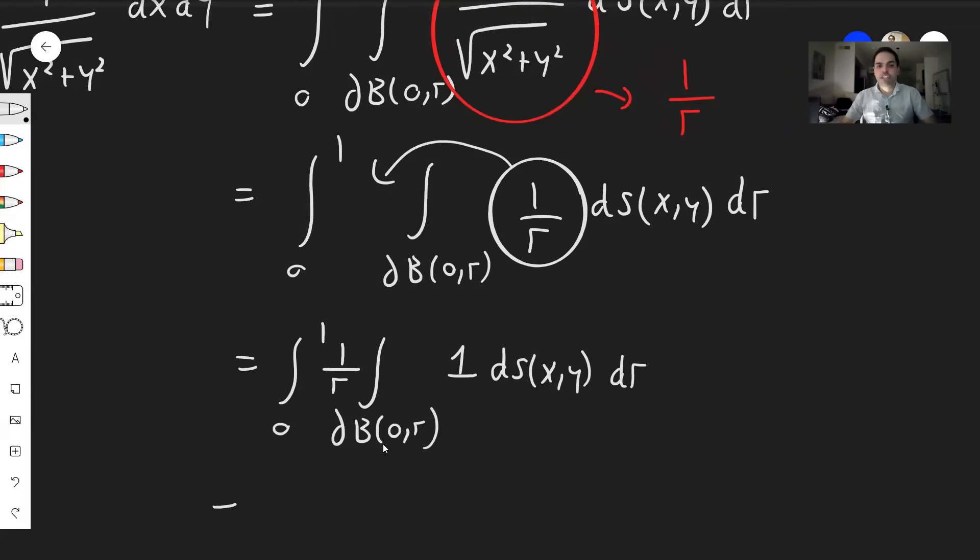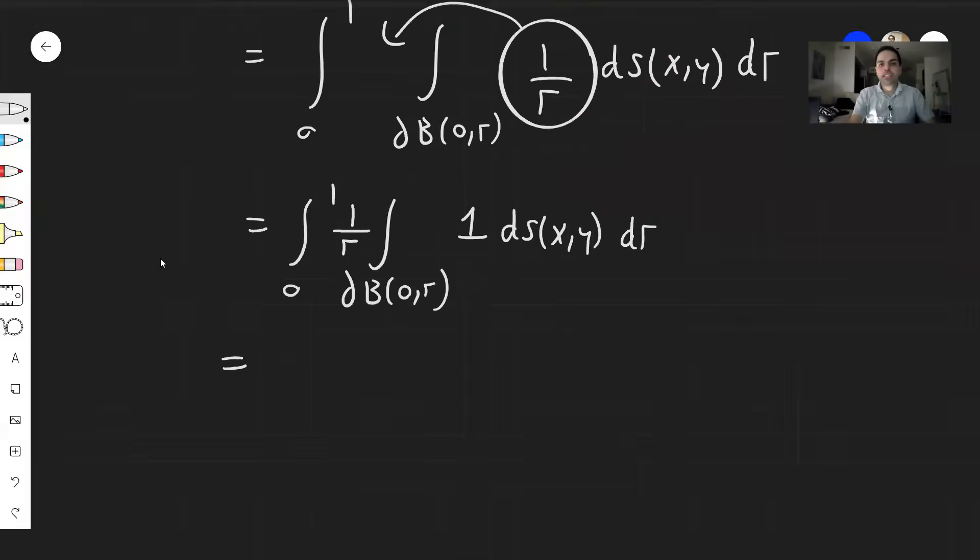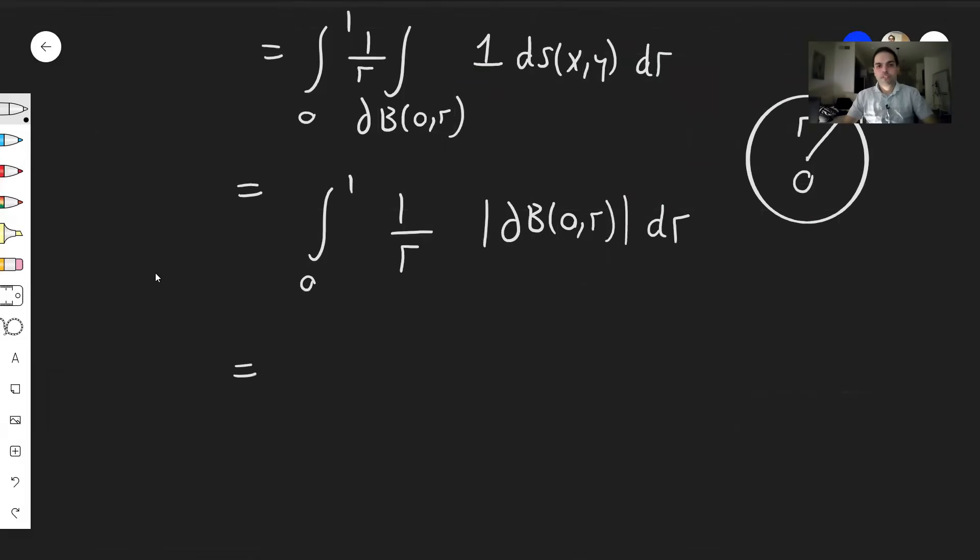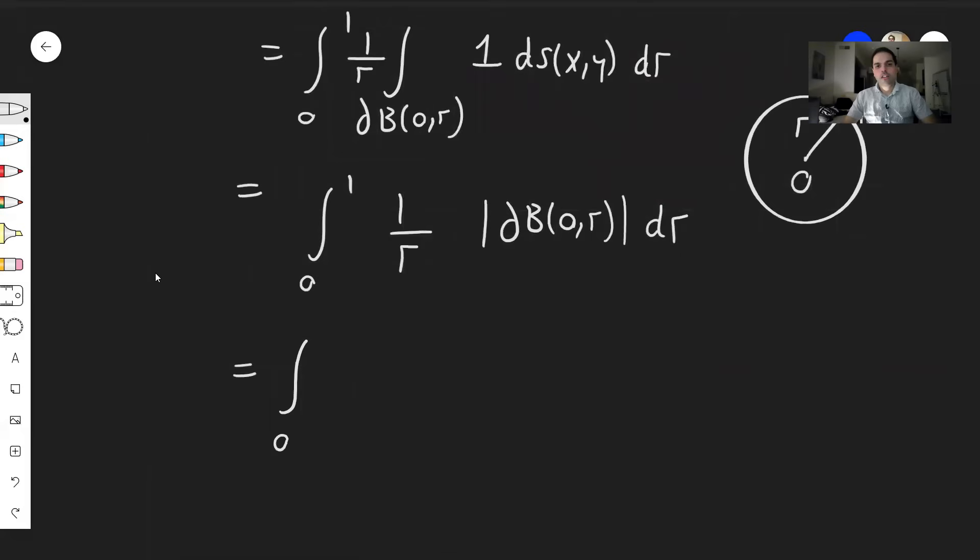And the important thing is the integral of 1 over any region is the volume or area or here the length of the region. So this becomes the integral from 0 to 1 of 1 over r. Again, the length of this circle and then dr. So again, we have the circle centered at 0 and radius r, while the perimeter of this is 2πr.